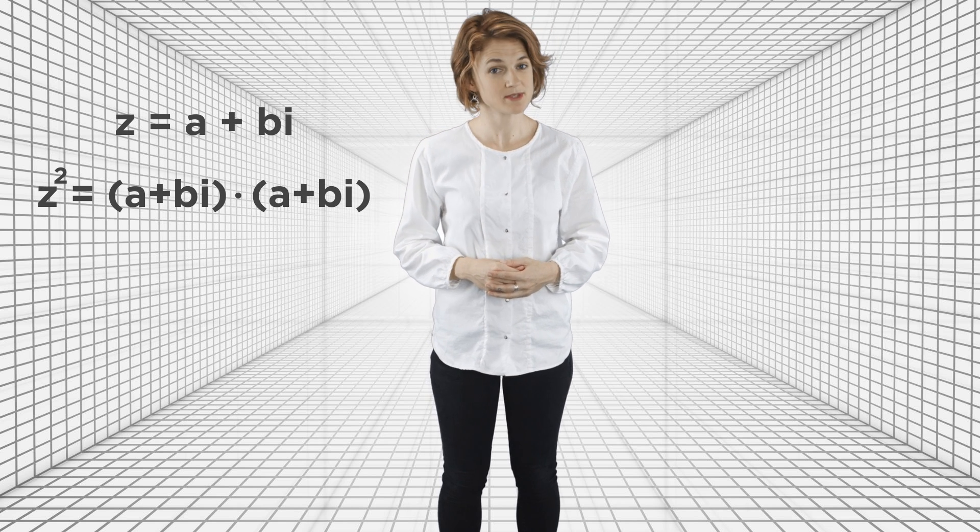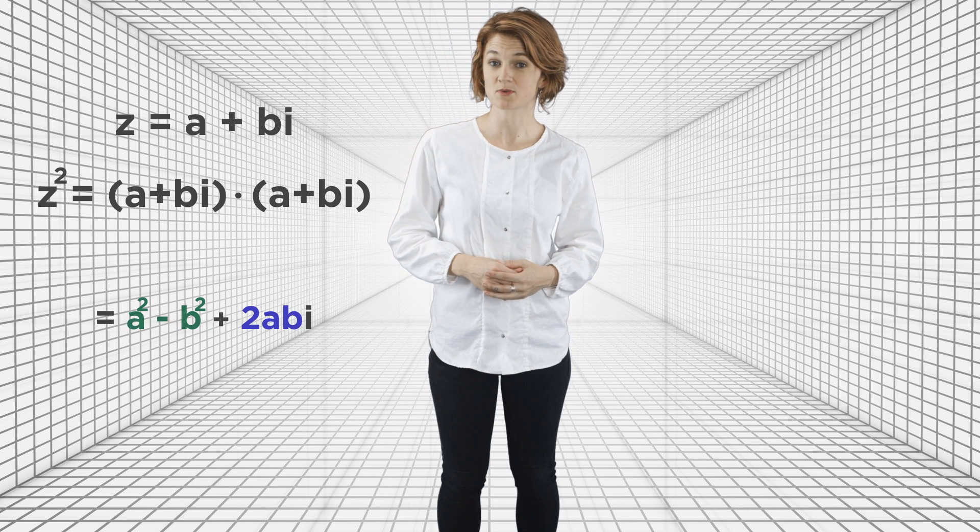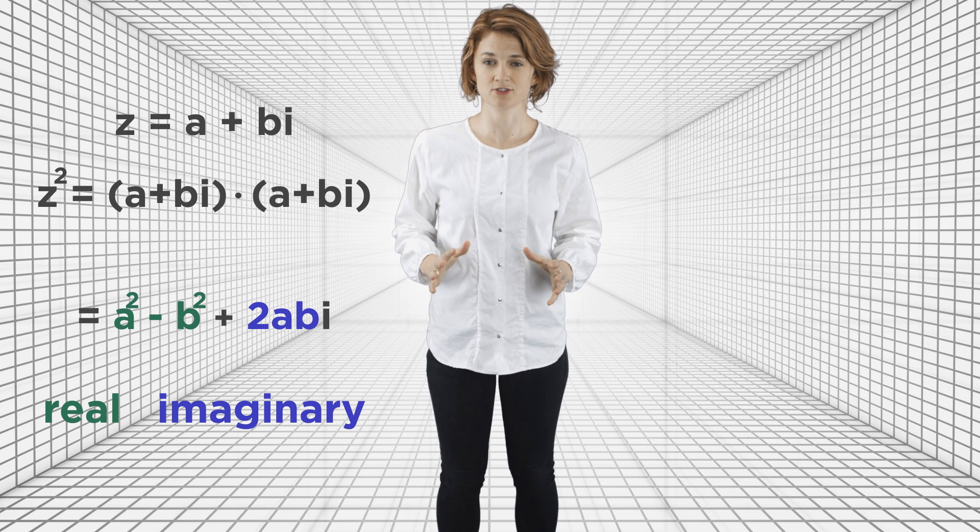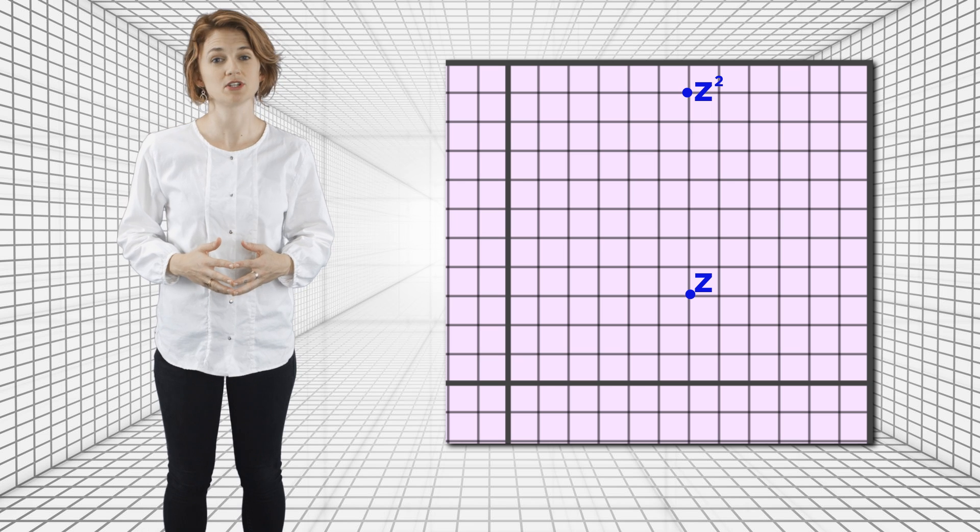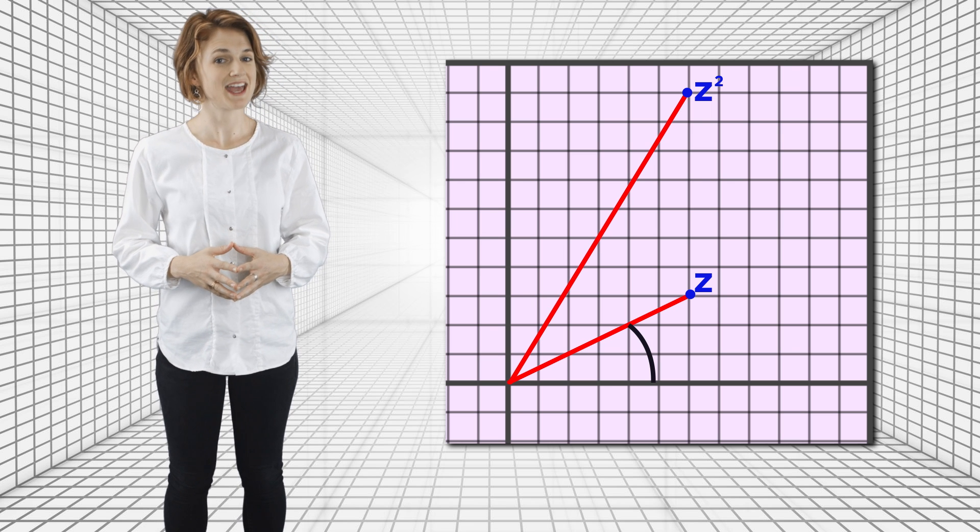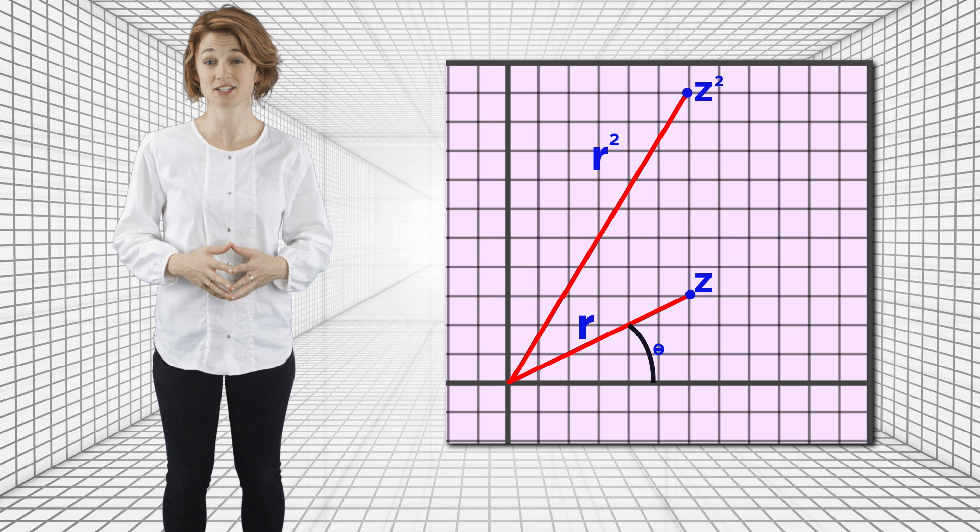There's also a linkage corresponding to the square function. If the input is on a point z, then the output will correspond to z squared. Let's review how that works. If z equals a plus bi, then z squared equals a plus bi times a plus bi, which is a squared minus b squared plus 2abi. So the real part is a squared minus b squared. And the imaginary part is 2ab. But here's what's geometrically interesting about it. When you square a complex point, the radius, so the distance from zero, squares. And the angle, measured off the positive real axis, doubles.